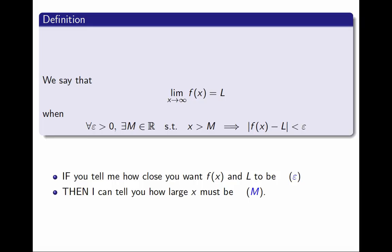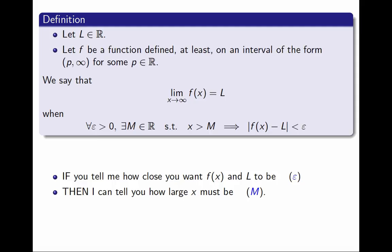For this to be a proper formal definition, I should introduce all the variables. So I will add at the top that L must be a real number and f must be a function. And to make sense, to talk about this limit, I'm going to require that f is a function that's defined at least on an interval of the form (p, infinity) for some real number p. In other words, so that we can talk about what happens to the function when x is large.